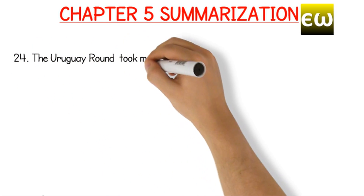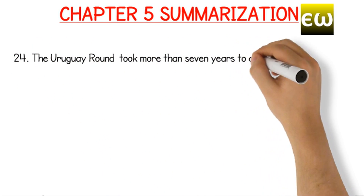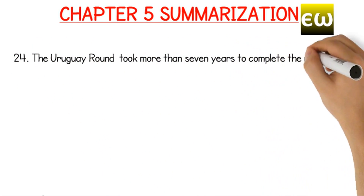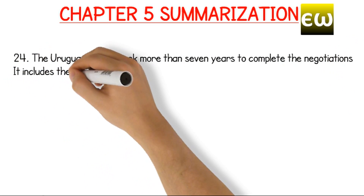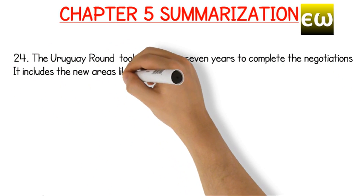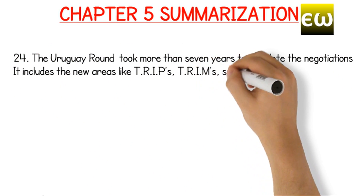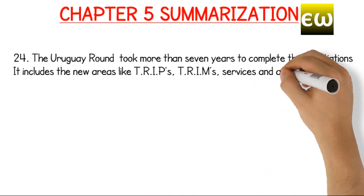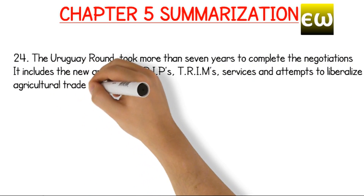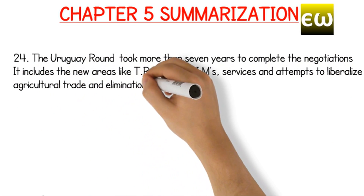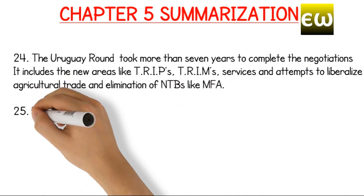The Uruguay Round took more than seven years to complete the negotiations. It includes new areas like TRIPs, TRIMs, services, and attempts to liberalise agricultural trade and elimination of NTBs like MFA.